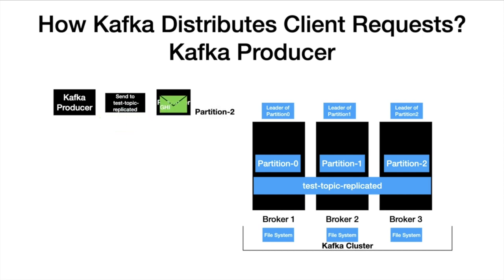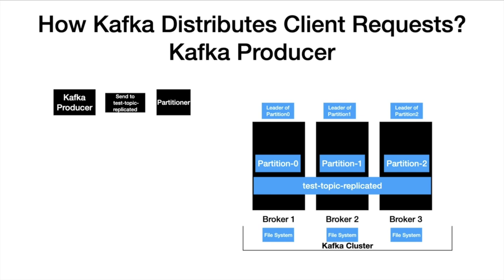Next, the message GHI follows the same steps. It resolves to partition 2 and the leader of partition 2 is broker 3, so the message is directed to broker 3. As you can see, the client requests from the producer end are distributed between the brokers based on the partition, which indirectly means that the load is distributed between the brokers.